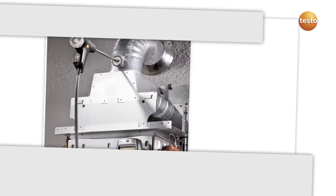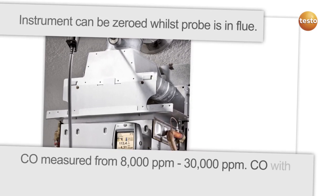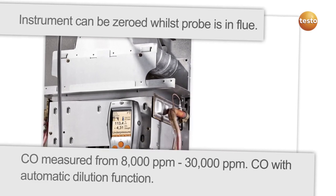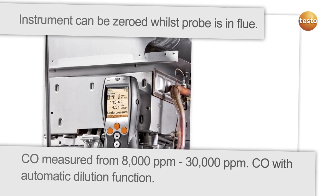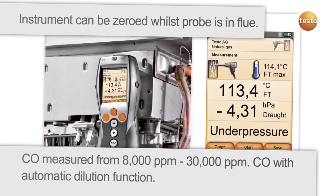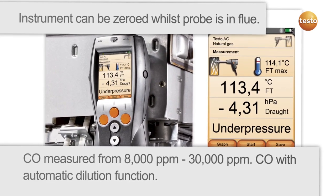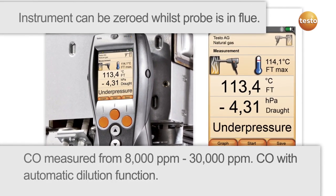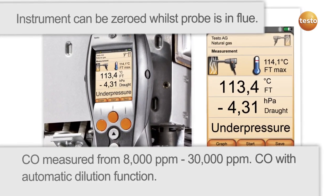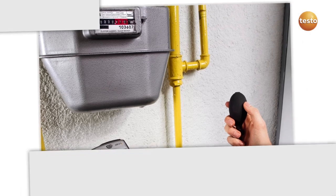The probe can conveniently remain in the flue during zeroing. In CO measurement, dilution is automatic from 8,000 ppm up to 30,000 ppm CO.